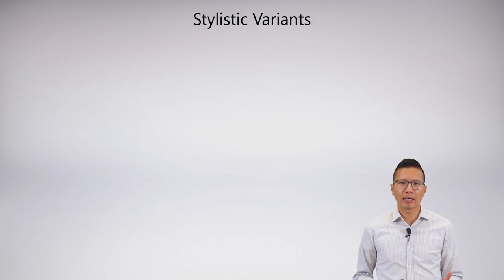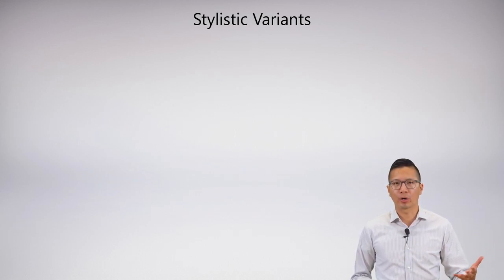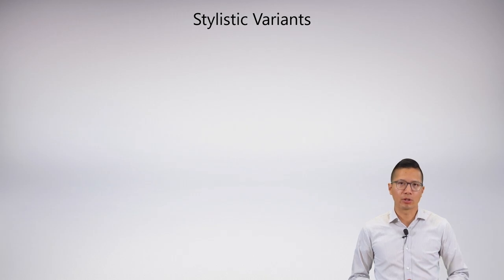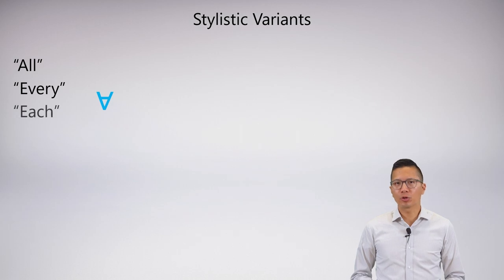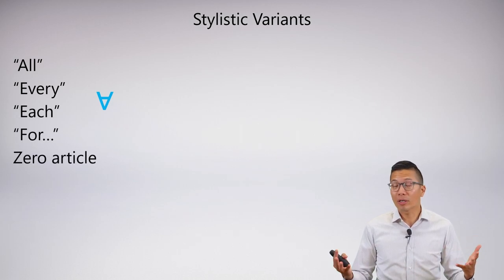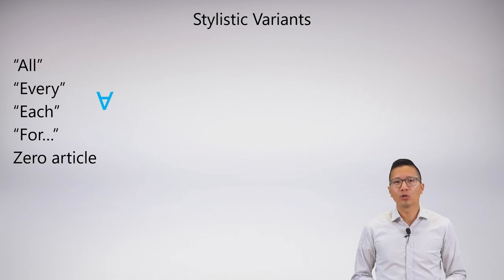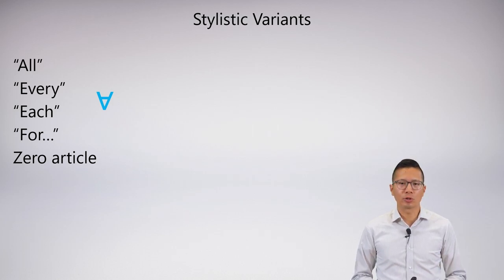What we're going to start with are the stylistic variants of our quantifiers. Remember that we had lots of stylistic variants for all our connectives, and now the same thing applies to the quantifiers. Unfortunately, it's not as nice as it was before. So let's start with the universal. You've actually heard me use a bunch of the stylistic variants of the universal already — all, every, each, for all, for every, and so on. So it's not too complex with the universal.